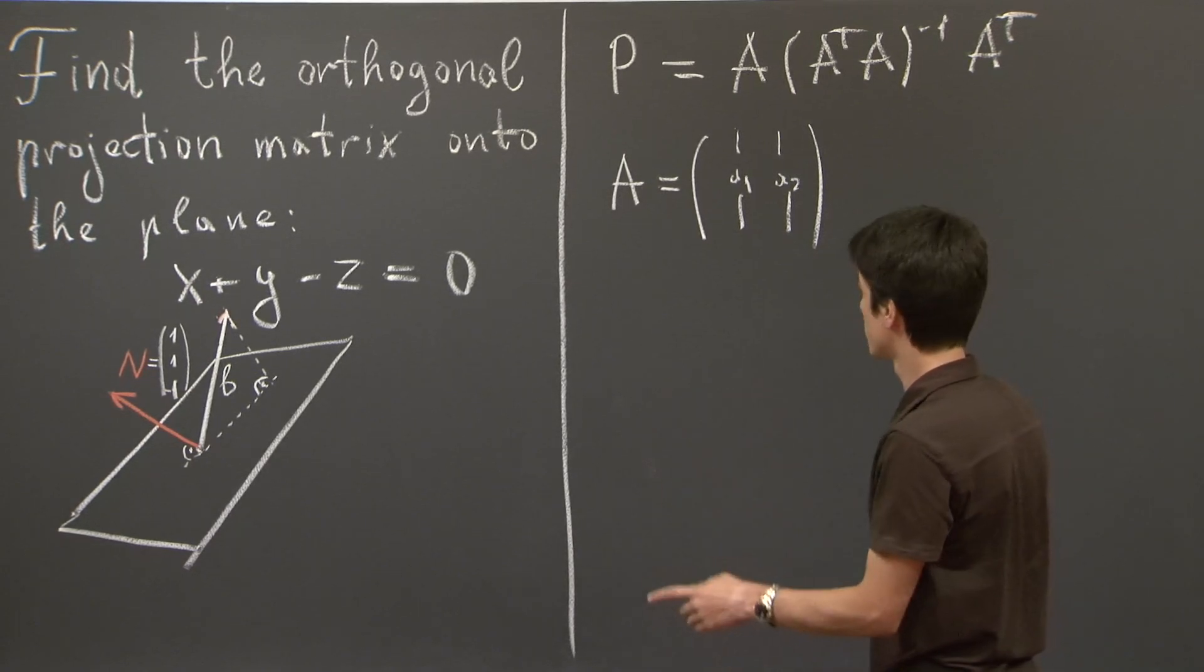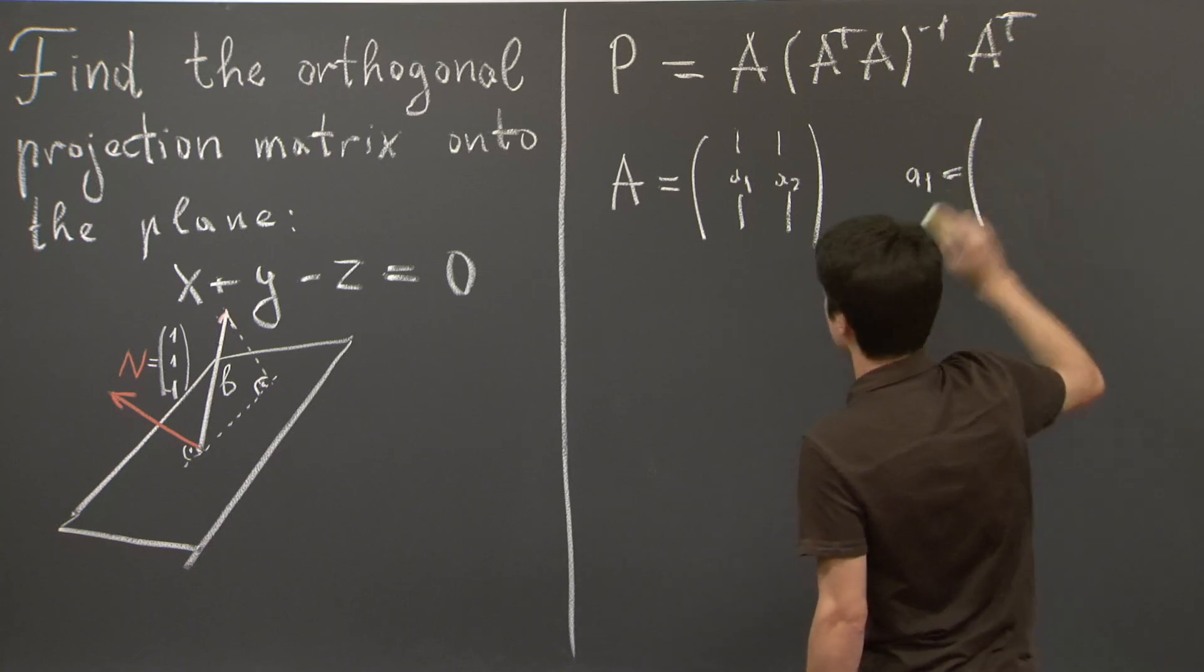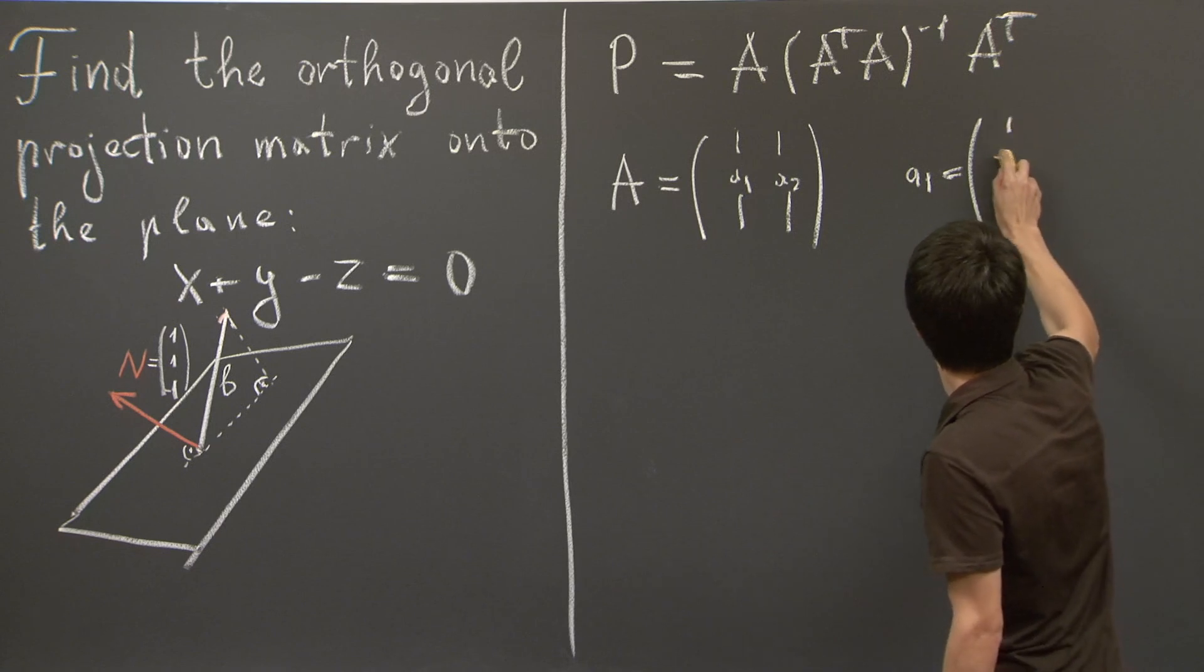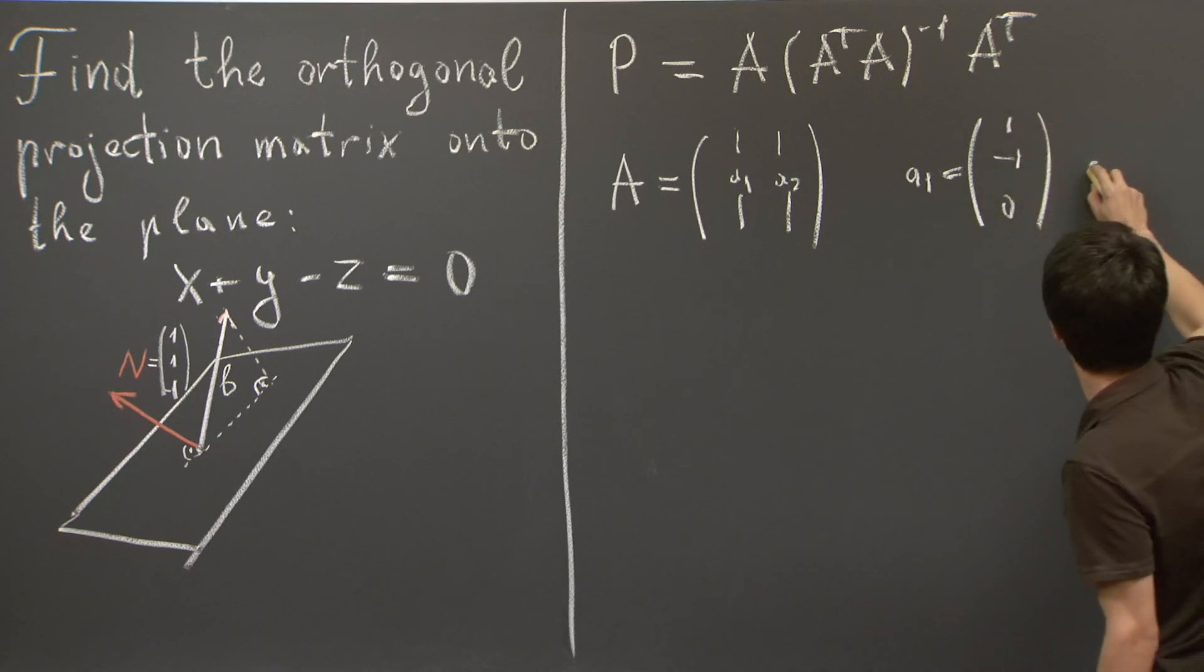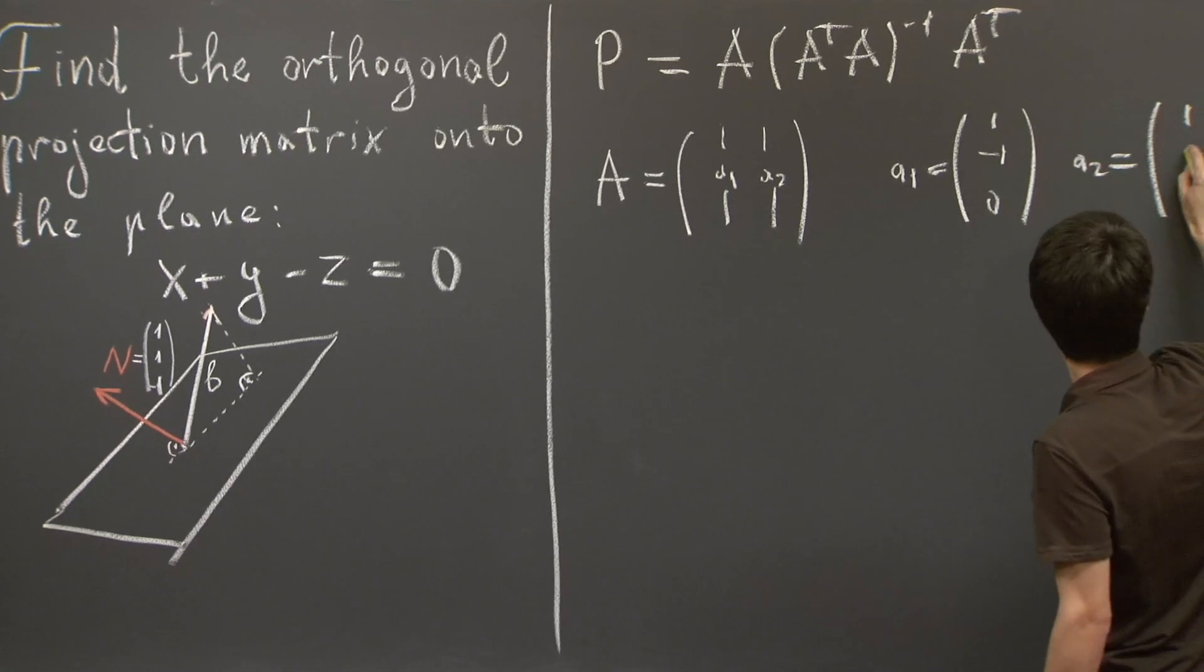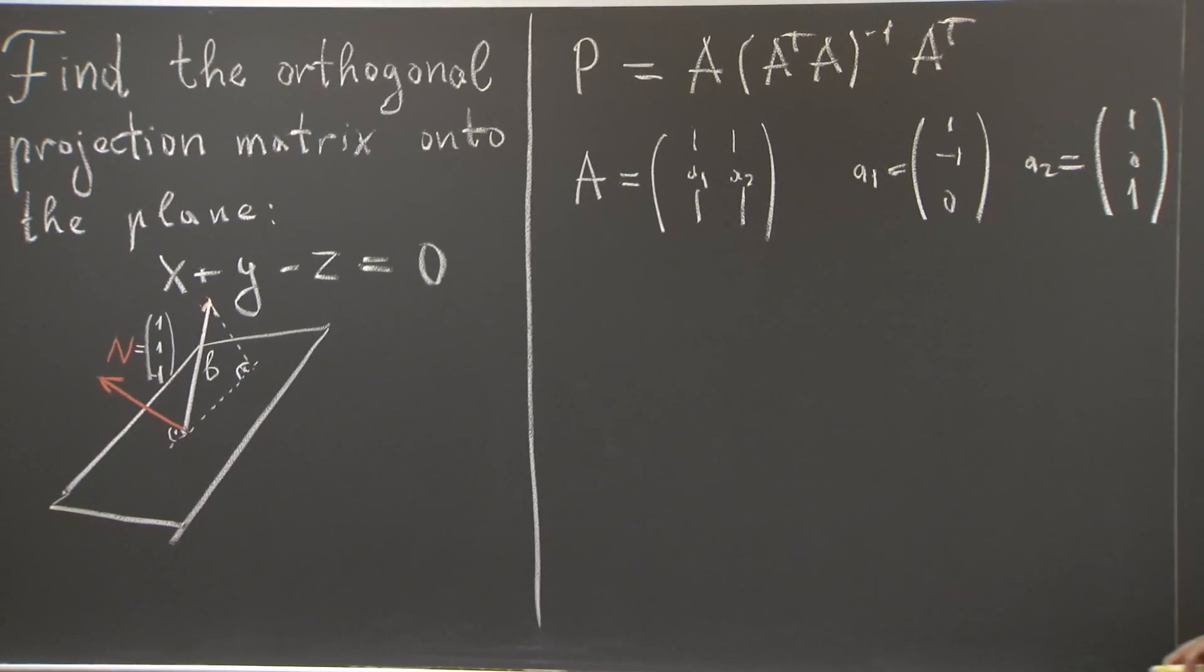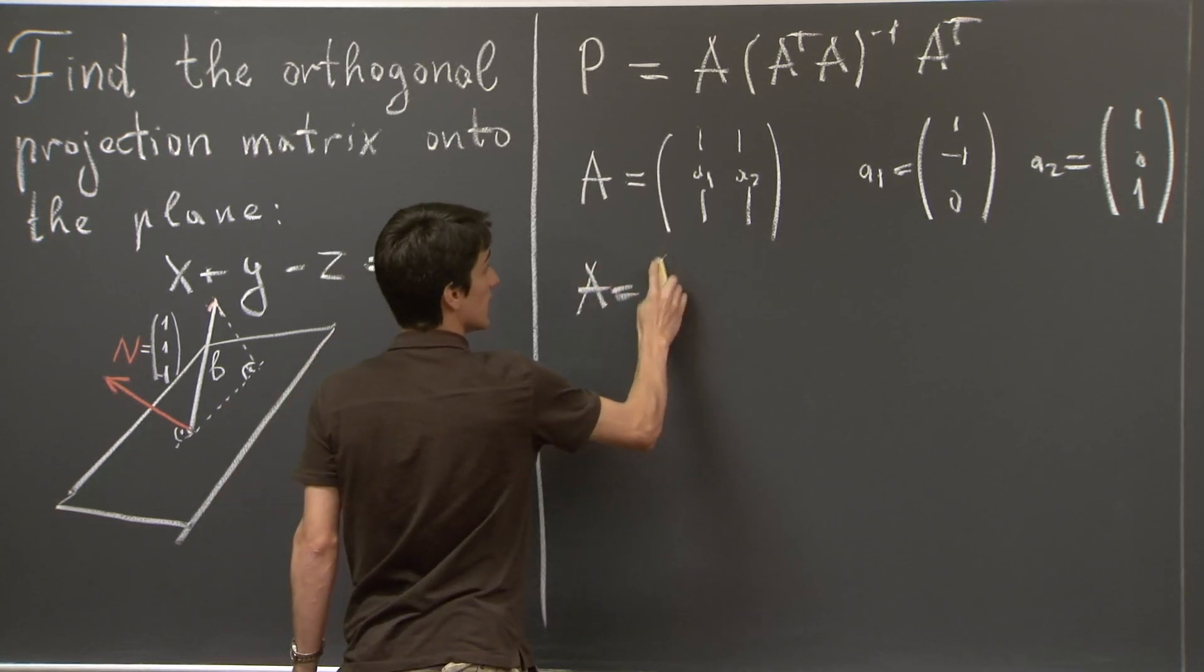So this is fairly straightforward. One choice that works, for example, is 1, negative 1, 0 for the first column, and 1, 0, 1 for the second column. And let me write out the matrix A.